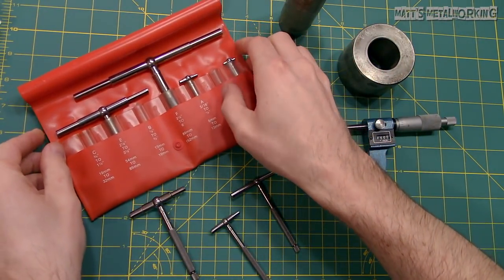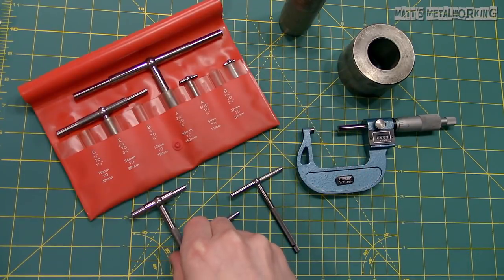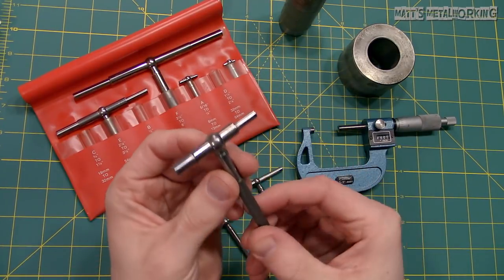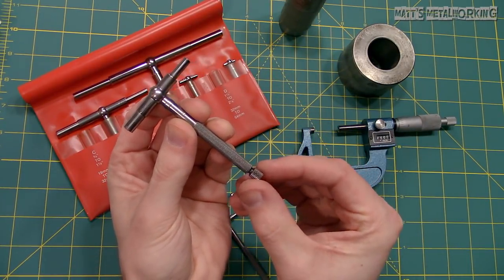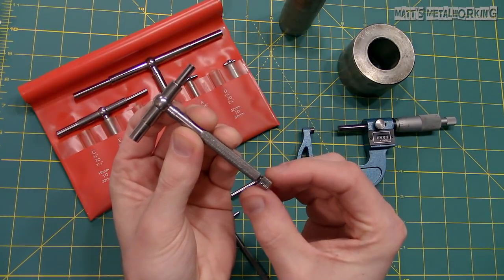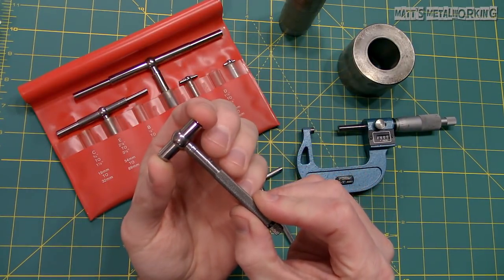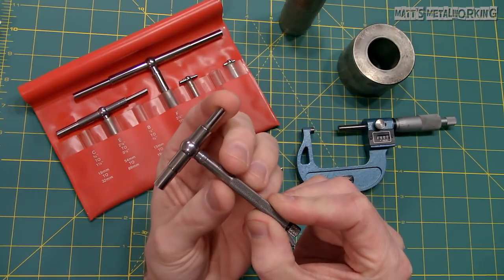There are two types of bore gauges available which I have here. Both will have knurled thumb screws on the end to lock or unlock the measuring plungers. It can also be referred to as legs, anvils, pistons, or spindles.